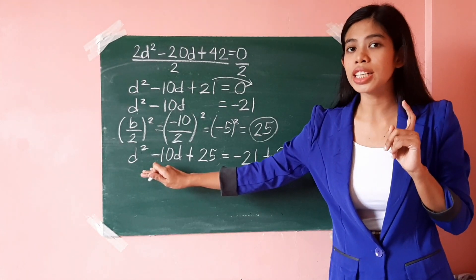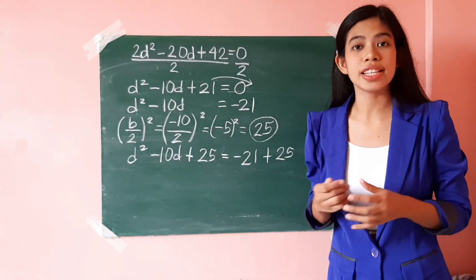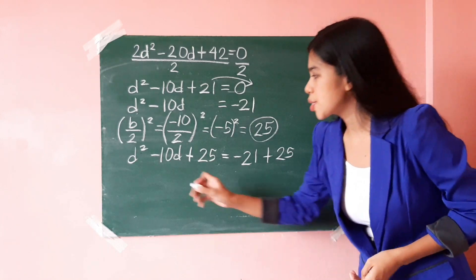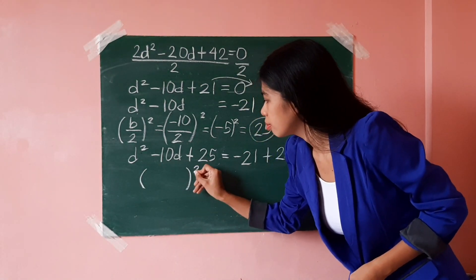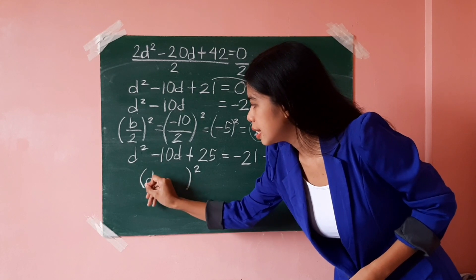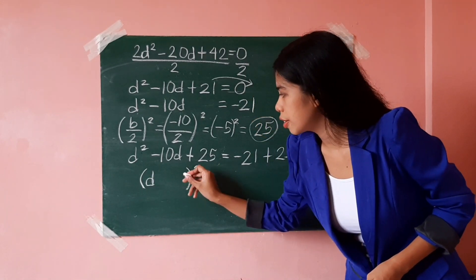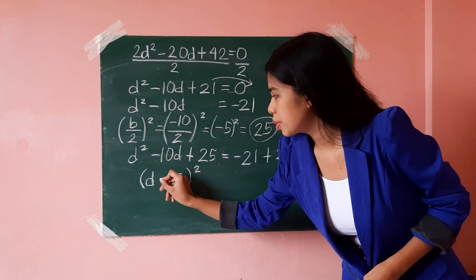And perfect square trinomial can be expressed as a square of a binomial. So, that's d². The square root of 25 is 5, so negative.